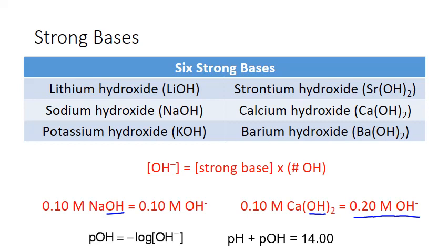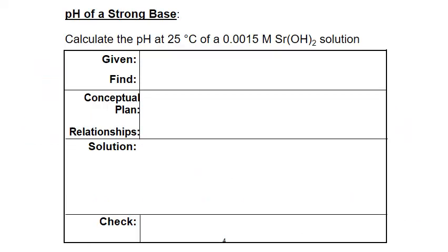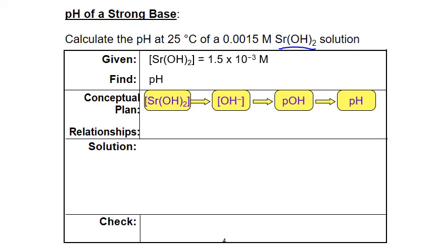Let's work through an example for a strong base. We want to calculate the pH of a 0.0015 molar strontium hydroxide solution. This is one of the bases on the slide we just saw, so we know we're dealing with a strong base. We're going to start with the concentration of strontium hydroxide and work toward pH. To do this, we go from the concentration of strontium hydroxide to the concentration of hydroxide alone, then calculate pOH and pH.